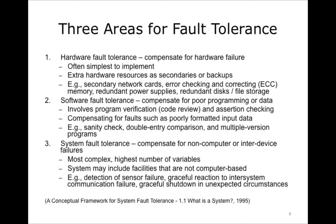There are three areas in which to apply fault tolerance. Hardware: the term fault tolerance usually means automatic compensation for faults or failure of computing hardware. This is often the simplest kind of redundancy to implement, though not necessarily the cheapest. Using additional components deployed in parallel or other redundant fashion allows the system to operate even if one piece fails. Techniques include redundant power supplies, error checking and correcting (ECC) memory, additional network interfaces with secondary connections, and redundant data storage.